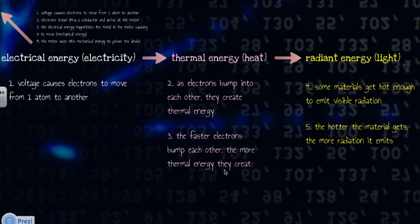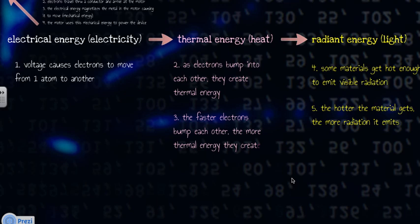So again, to summarize this part, electrical energy, electricity, can be transformed into thermal energy. And then if enough thermal energy builds up, it's transformed into radiant energy.